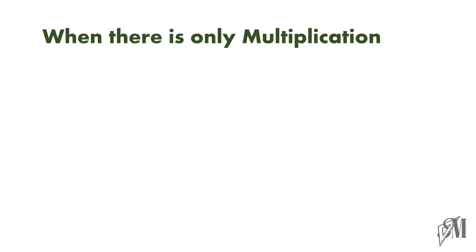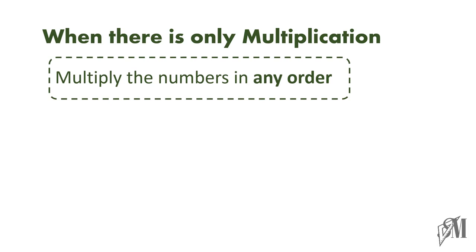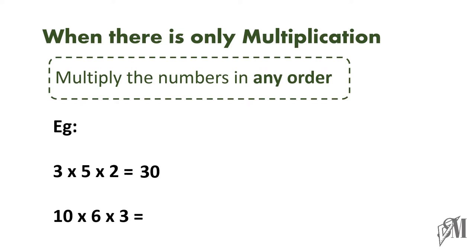The next section is when there is only multiplication. Just like when there is only addition, when there is only multiplication too, you can follow any order. For example, 3 into 5 is 15, 15 into 2 is 30. Similarly, going the other way around, 2 into 5 is 10 and 10 into 3 is 30. Whatever the order you follow, you get the same answer. Another example: 3 into 6 is 18, 18 into 10 is 180. The same answer you get when you start from 10 and come up to 3.